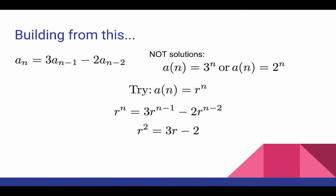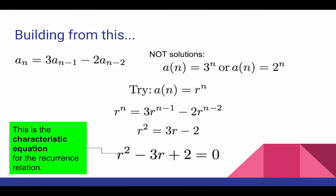Which now no longer has any n's in it. If I get all the terms onto one side of the equation, I see an equation that would not be out of place in a high school algebra class. This equation which we get from inserting the initial guess of r^n into the recurrence relation and then simplifying is called the characteristic equation for the recurrence relation.